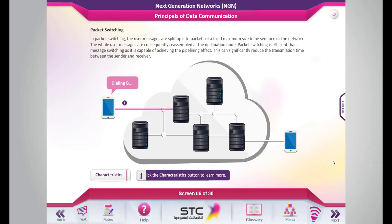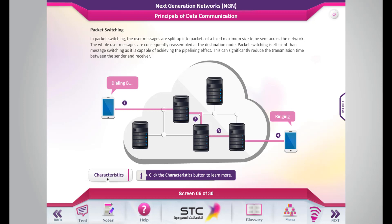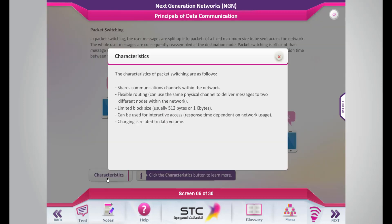In packet switching, the user messages are split up into packets of a fixed maximum size to be sent across the network. The whole user messages are consequently reassembled at the destination node. Packet switching is more efficient than message switching, as it is capable of achieving the pipelining effect. This can significantly reduce the transmission time between the sender and receiver. Click the Characteristics button to learn more.